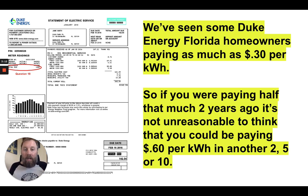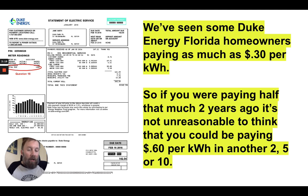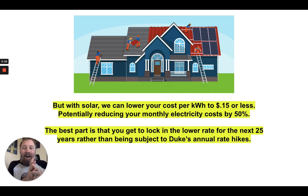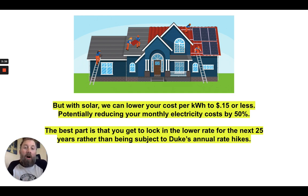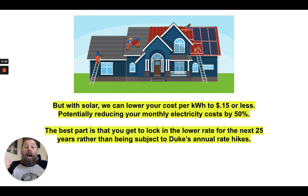It's not unreasonable to think you could be paying 60 cents per kilowatt hour in another two, five, or ten years. But with solar, we can reduce your cost per kilowatt hour to 15 cents or less, potentially reducing your monthly electric costs by up to 50%. And the best part is you get to lock in that lower rate for the next 25 years, rather than being subject to Duke's annual rate hikes.